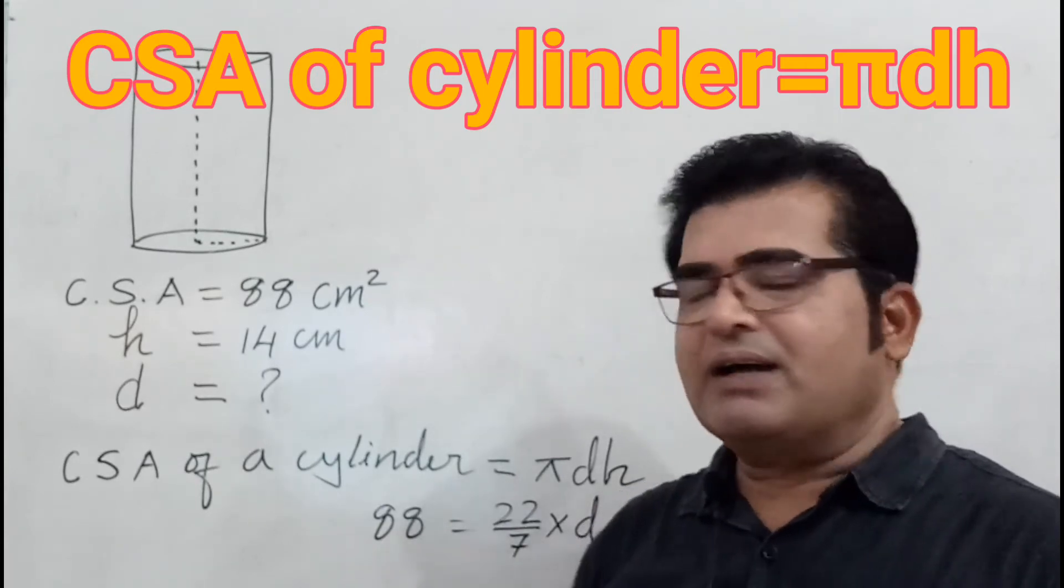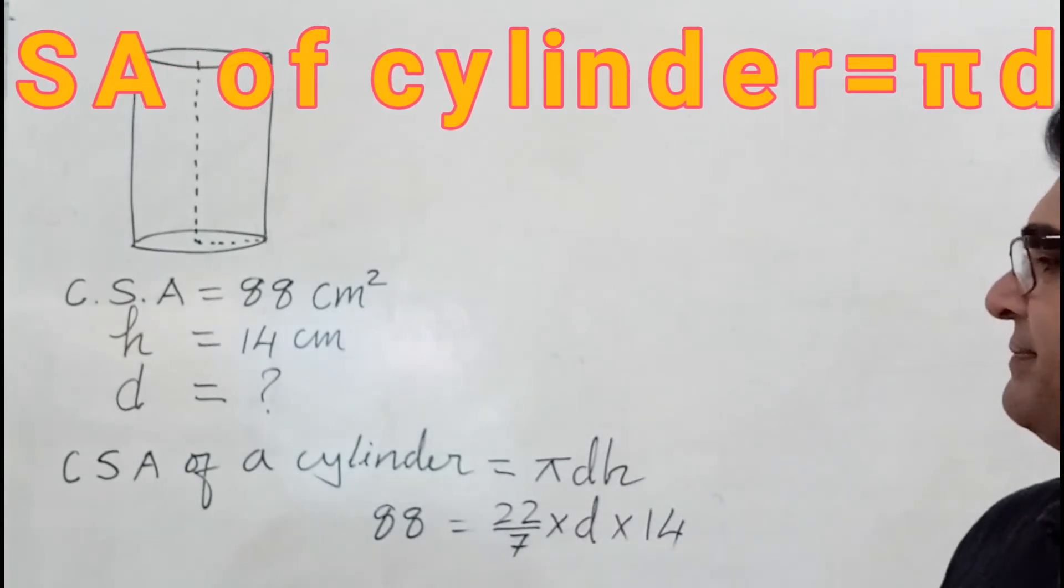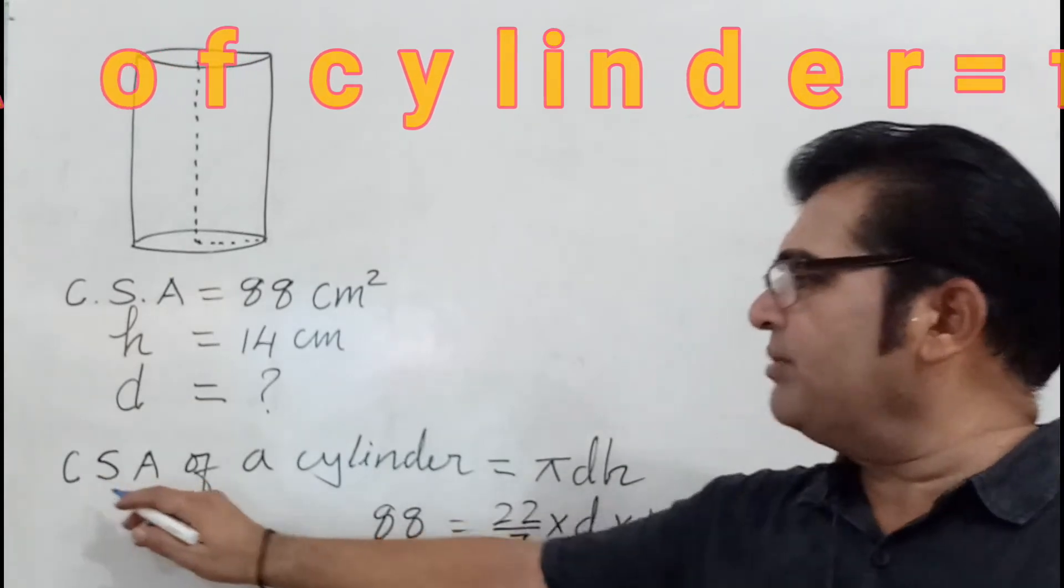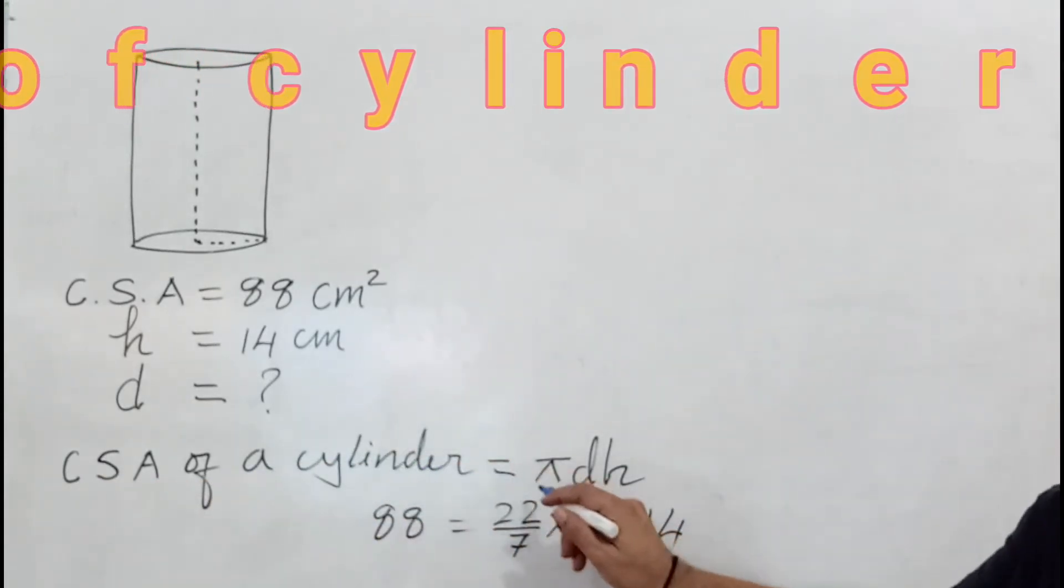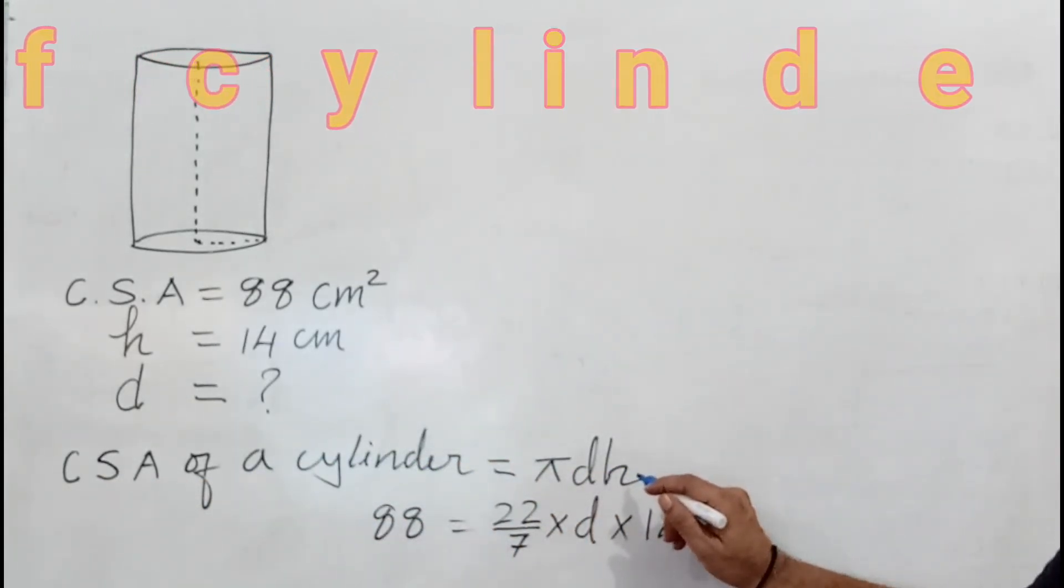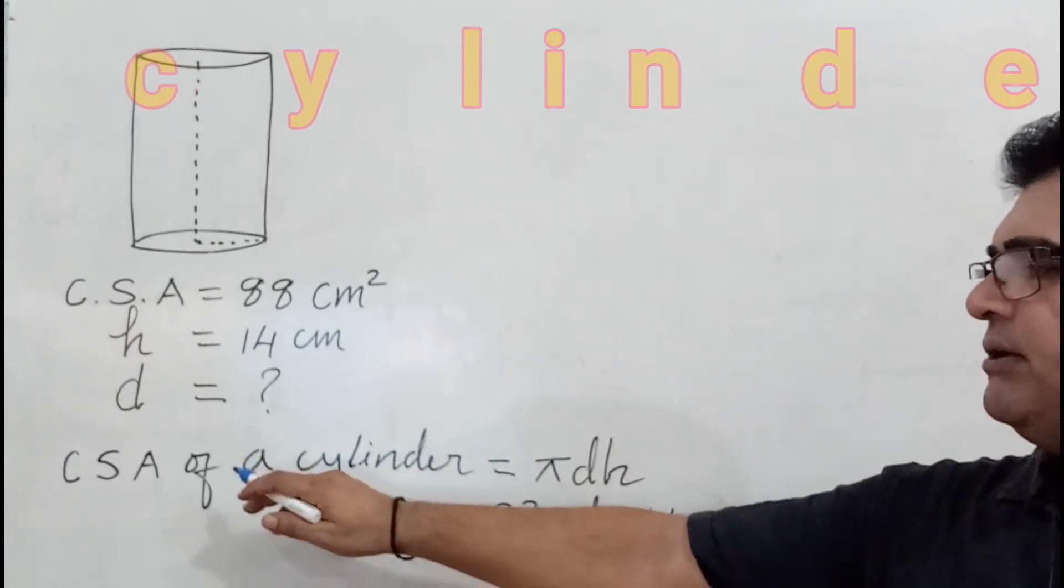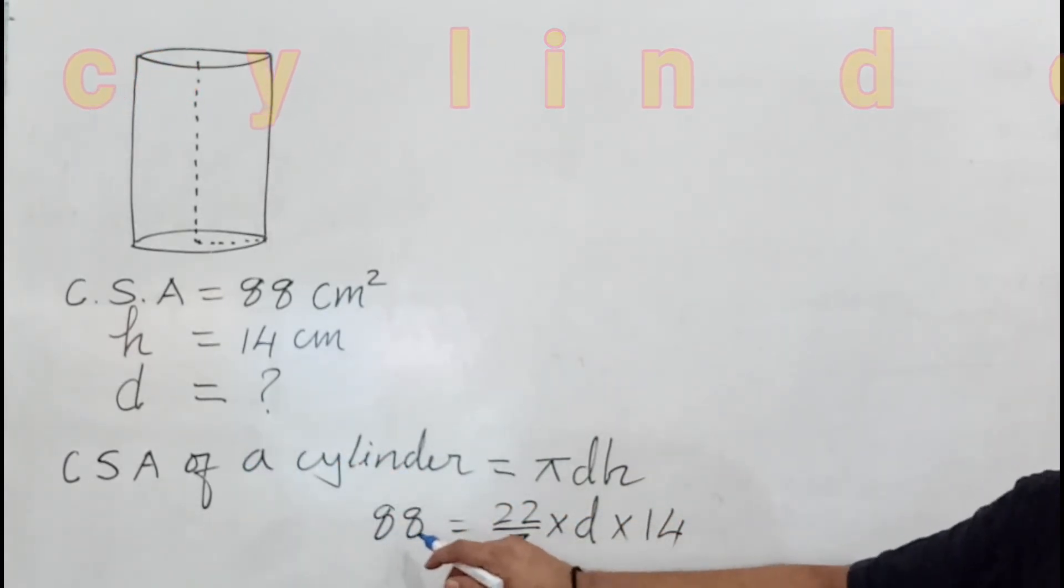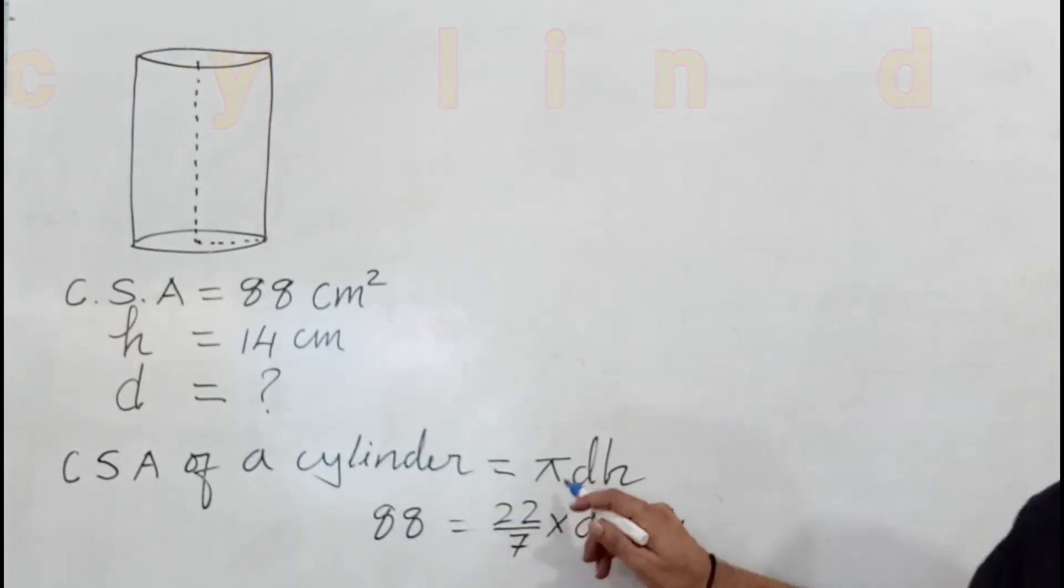First, write the formula: curved surface area of the cylinder equals πdh. Then put the values: 88 equals 22/7 times d (d for diameter, which is unknown) times 14 centimeters.